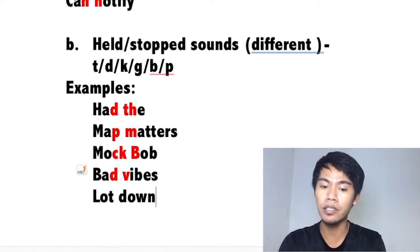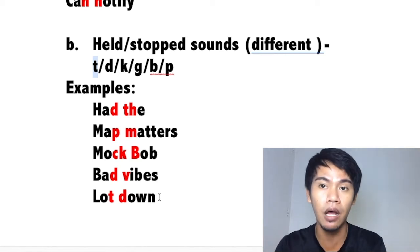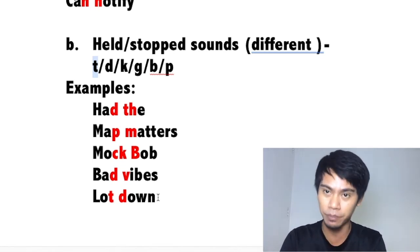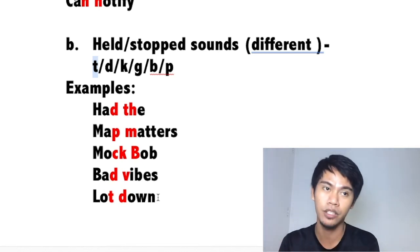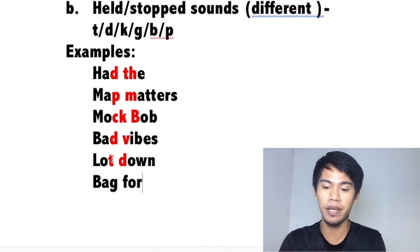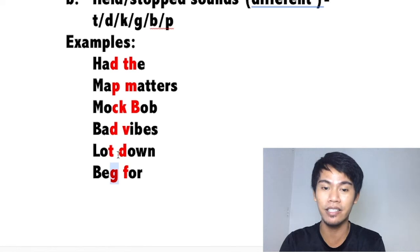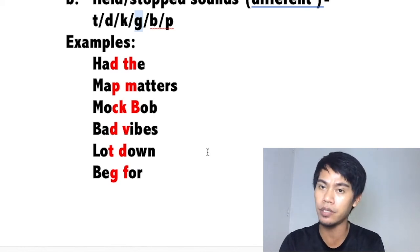Another example: 'lock down.' Consonant, consonant — yes. Do they have the same sound? No. The first sound of 'down' is D — it's in the list. So we can hold the sound. We say 'lock down,' not 'lock down' separately. Note: in a British accent, they pop the T sound instead. Last example: 'beg for.' Consonant, consonant. Do they have the same sound? No. The first sound is G — it's in the list. So we say 'beg for,' not 'beg for' with a separate released G.